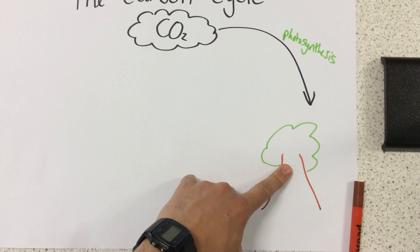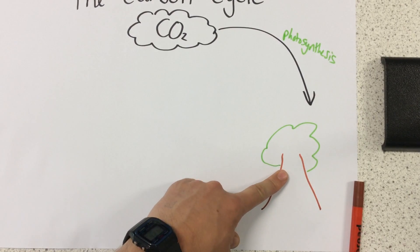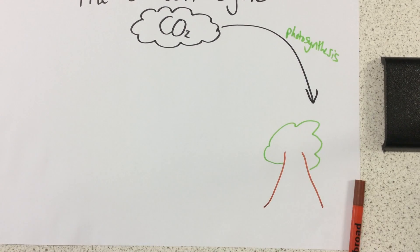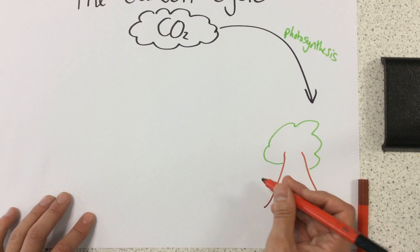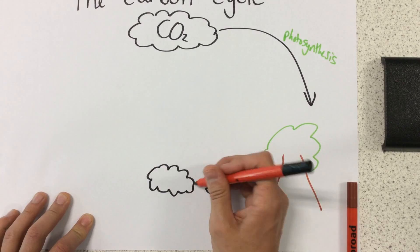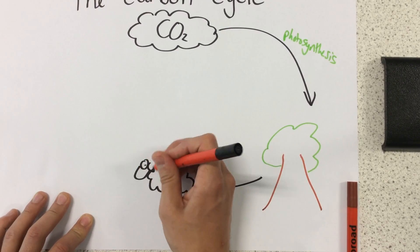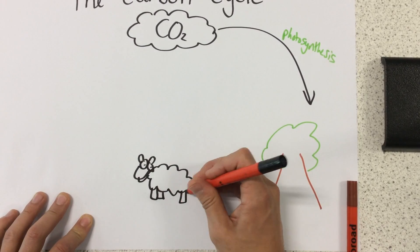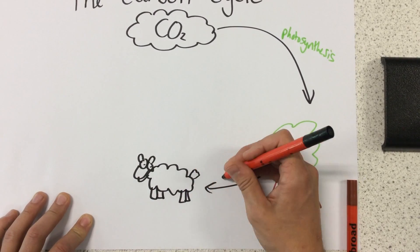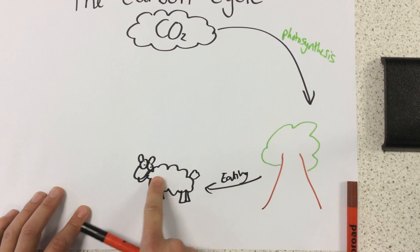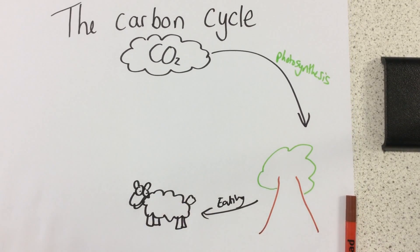Again, we're just taking it step by step. We're thinking, what could happen to this plant? Now I know we've drawn a tree here, but this could represent any plant. So this plant could get eaten by an animal. So here is my beautiful sheep. We can see that by eating, we have passed that carbon from the plant into the animal.